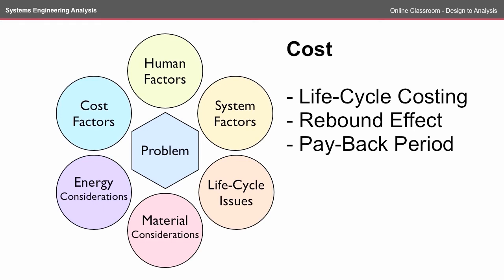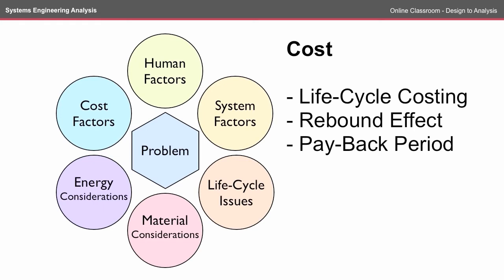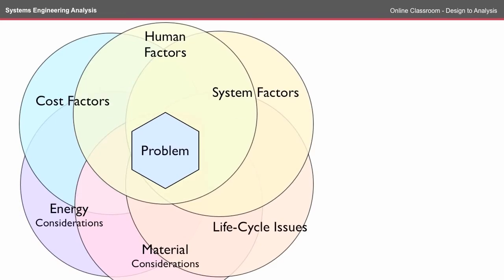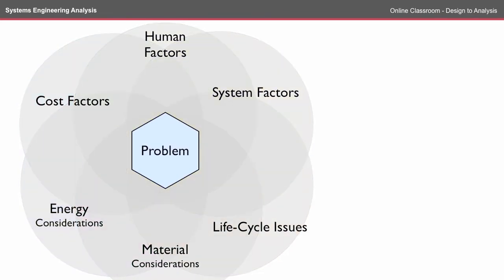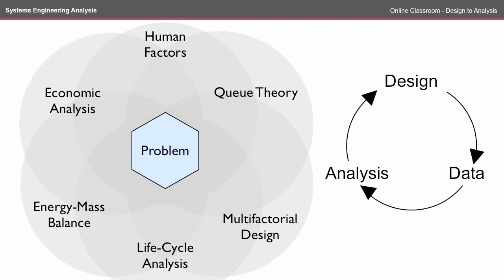These different perspectives don't necessarily sit with neat boundaries — they probably overlap to a large extent and the boundaries are very grey. We'll use these six different areas to look at the problem, and we'll use the approach that we need some data to inform our analysis, and that's going to inform our design. In your analyses you might go through this cycle a number of times and you also might look at these at a number of different levels.